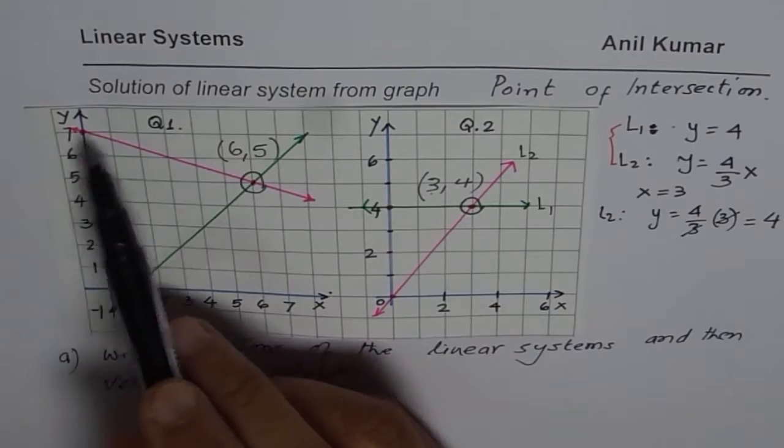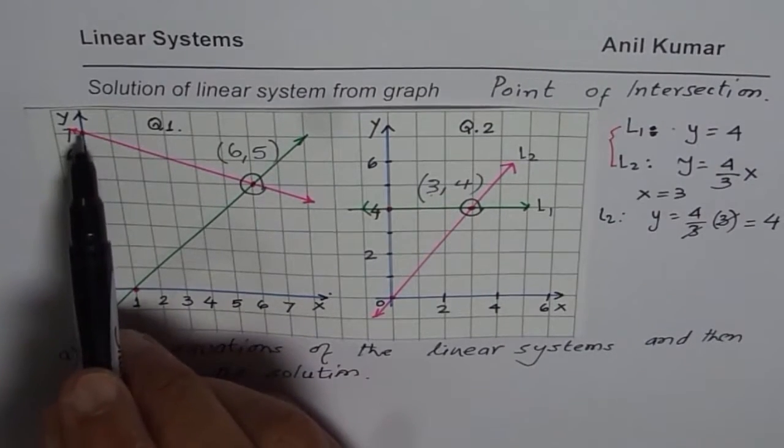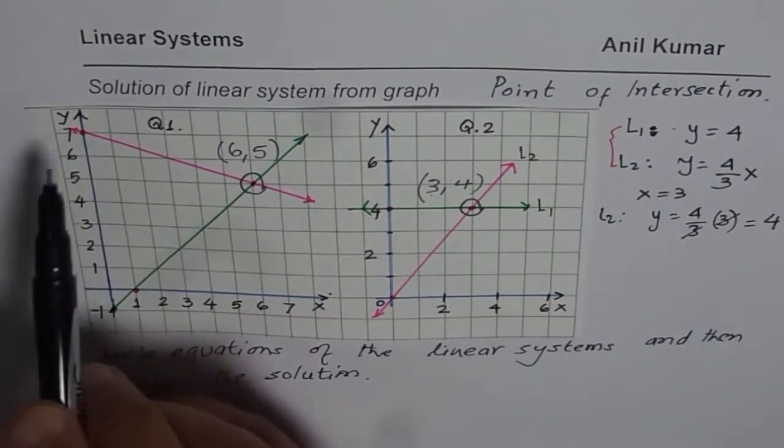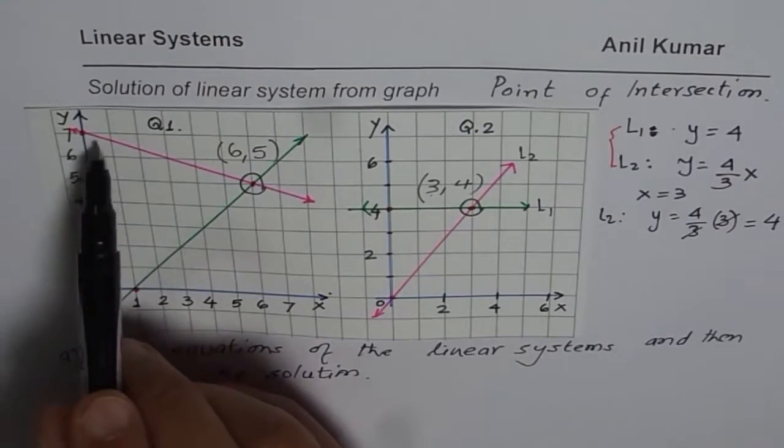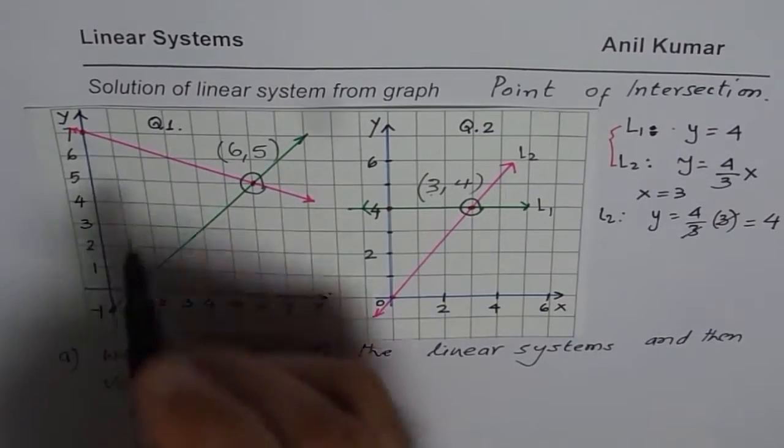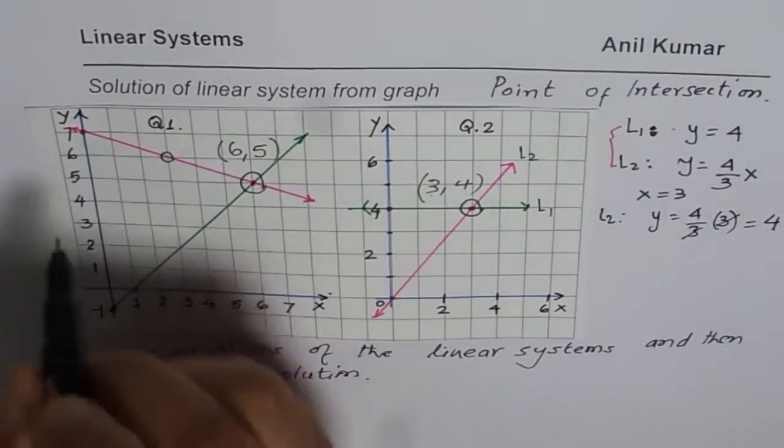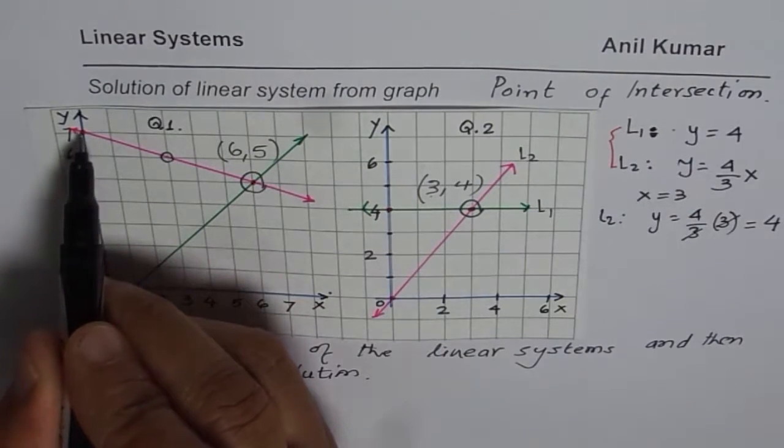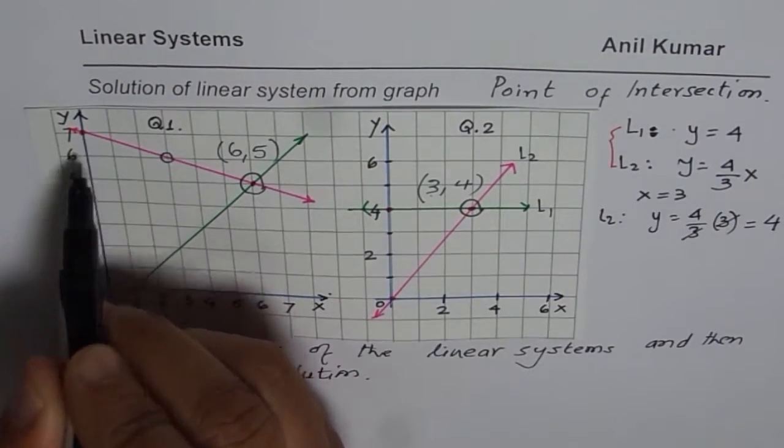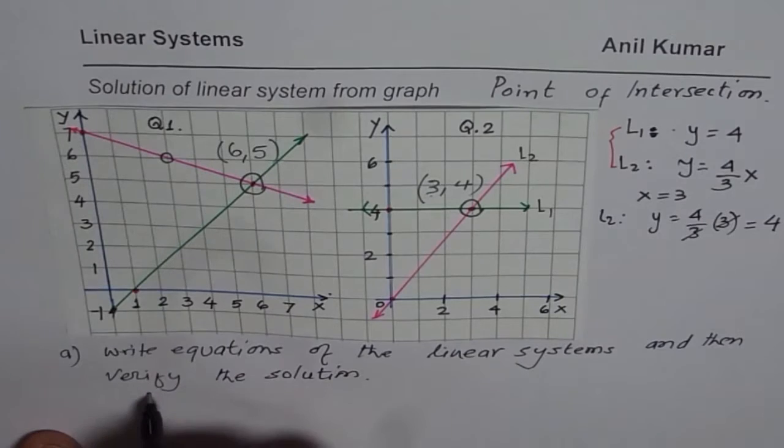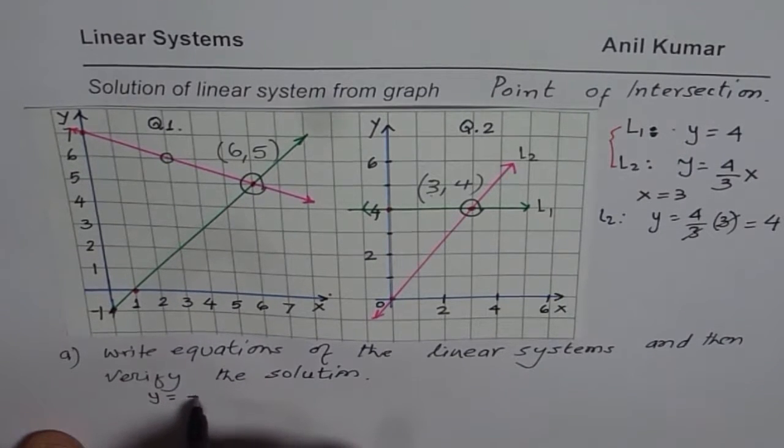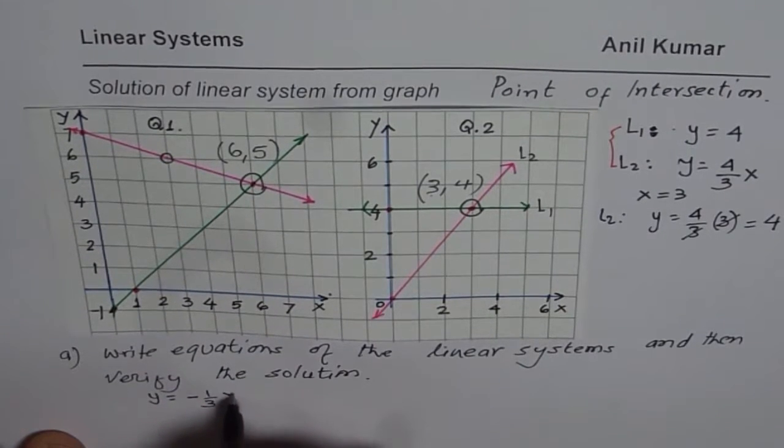For the first line, you know the y-intercept is 7. The slope is, let's take this point. If you take this particular point, slope is, rise is minus 1, run is 3. So you can write this equation as y equals minus 1 over 3x plus 7.